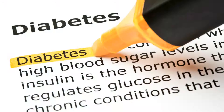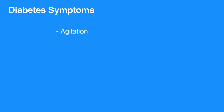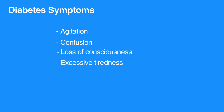Diabetes affects an individual's ability to regulate blood sugar. Fluctuations in blood sugar in either direction can produce symptoms such as agitation, confusion, loss of consciousness, excessive tiredness, weakness, and even seizure-like activity.